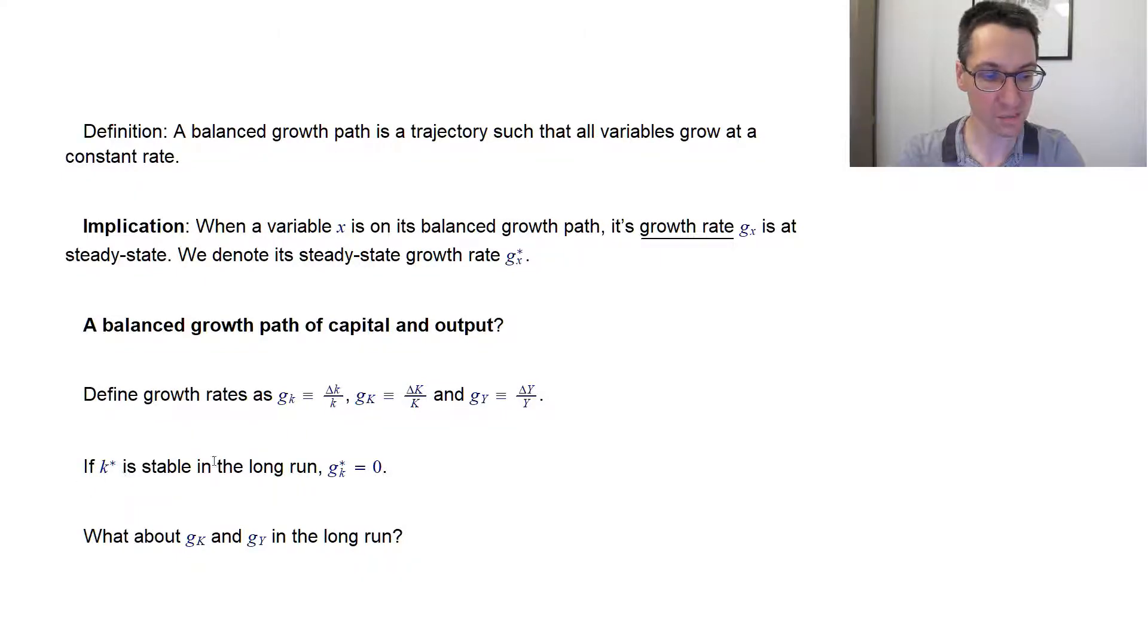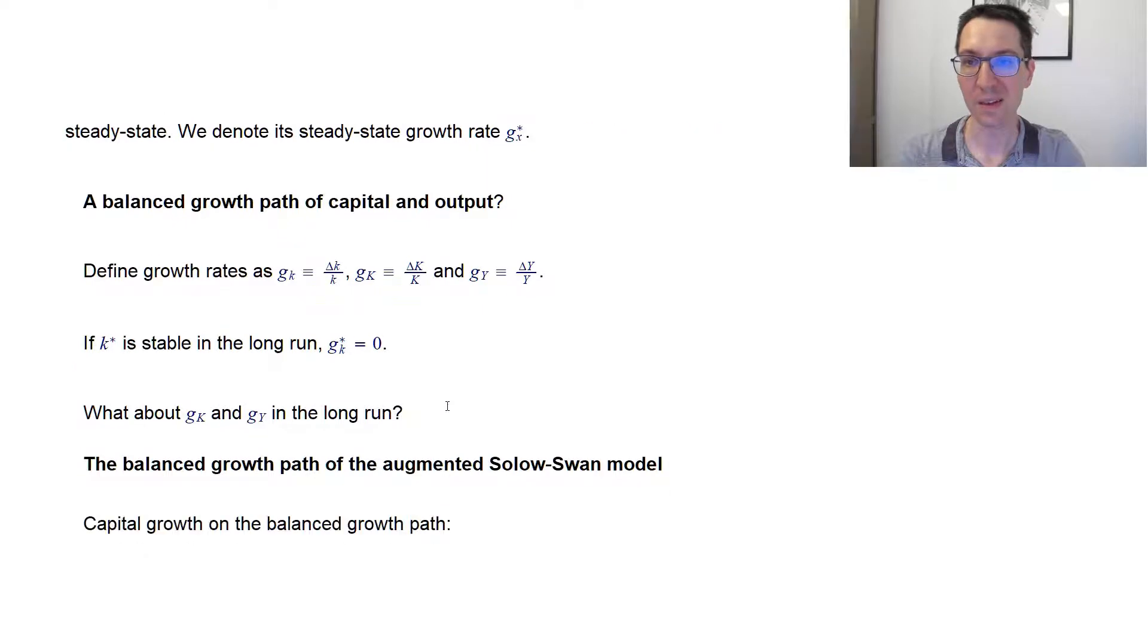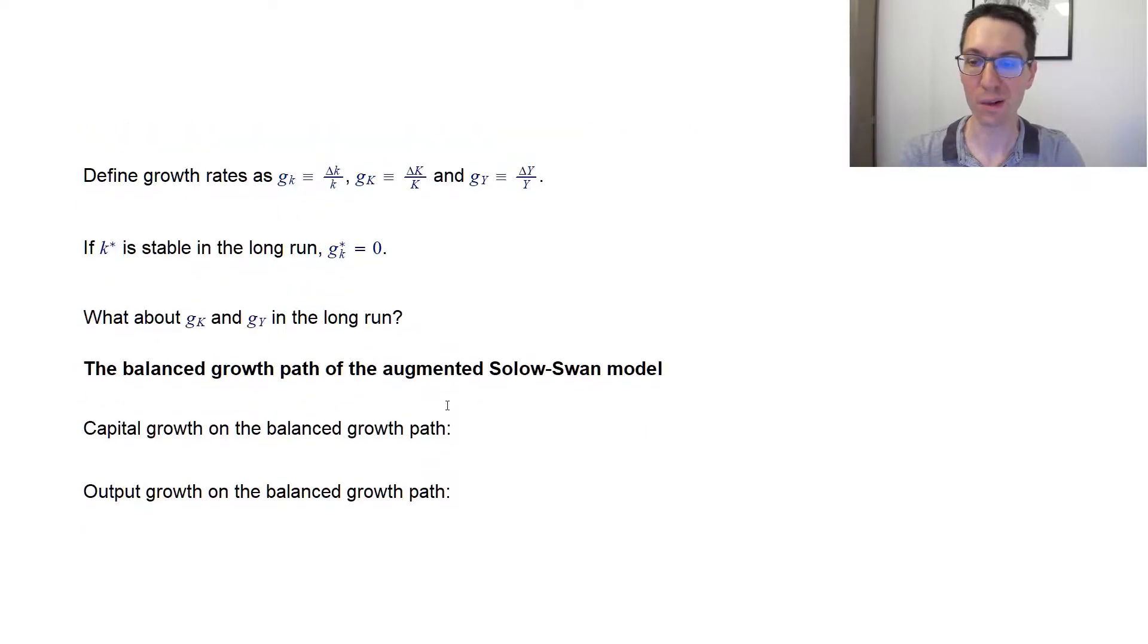We know that k star is stable in the long run. Delta small k star, the capital per worker. So we know that the growth rate of k star, g of k star, is zero. But what about the growth rate of the capital stock itself or the output itself in the long run? This is what we're going to try to compute next.